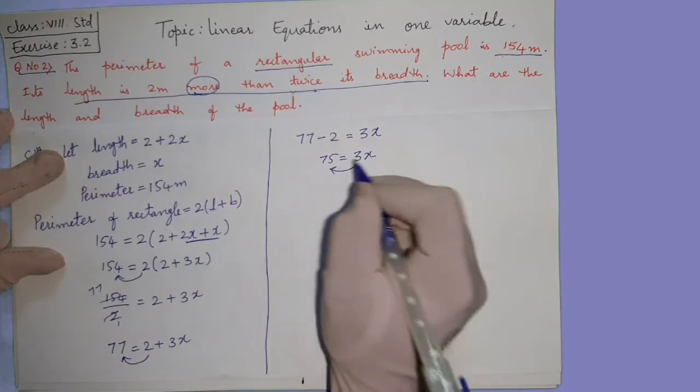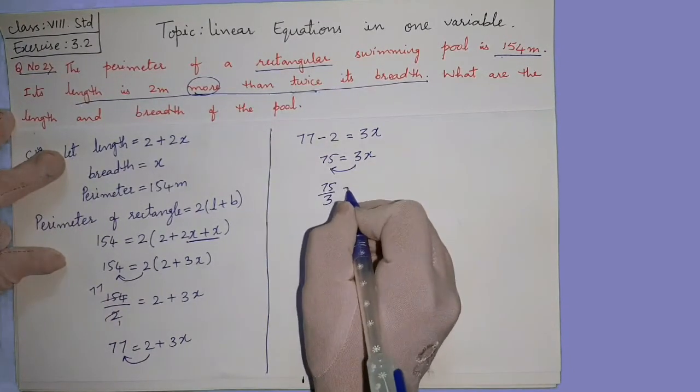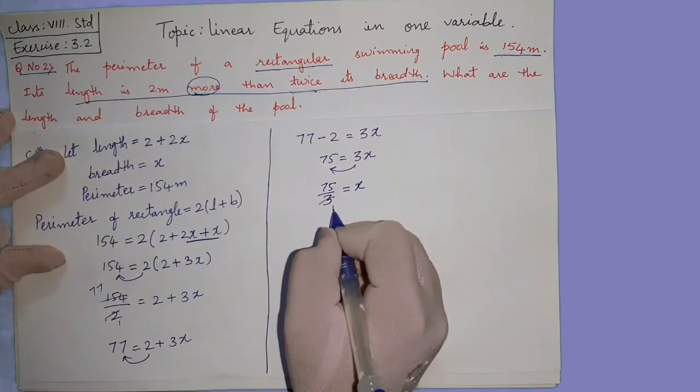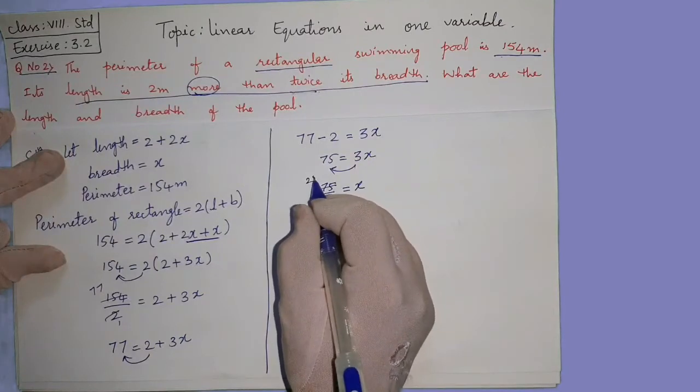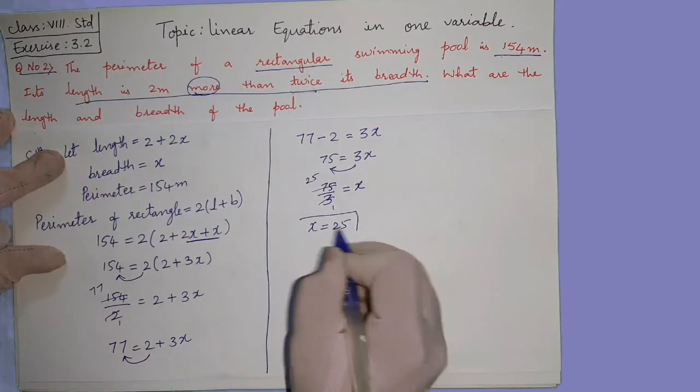Now we don't want this also, 3. So 3 also you transpose. 3 is in multiplication, if you change position it will go to division. 3 ones are 3, 3 twos are 6, 3 fives are 15. So x is 25. But we don't want x, we need the length and breadth.